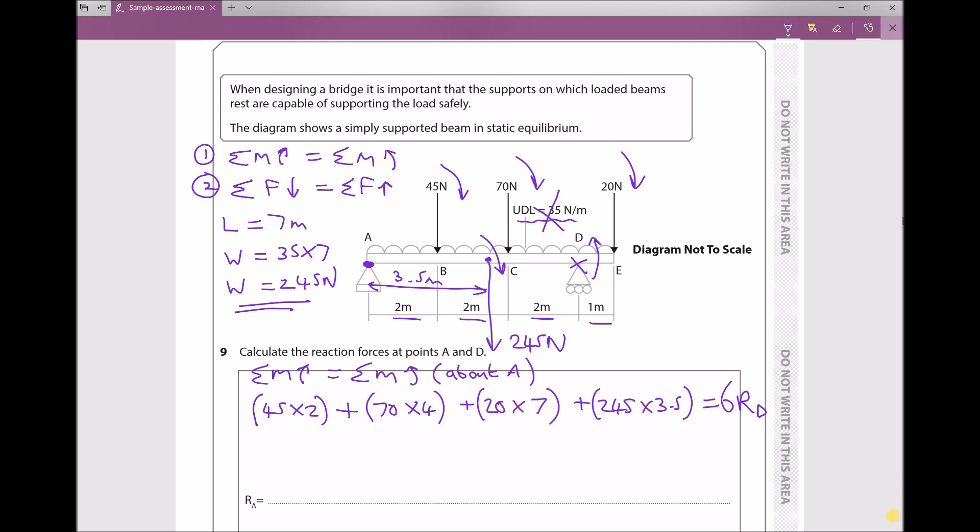So my next step is to simplify the left hand side. All I'm going to do is multiply that out. So (45×2) + (70×4) + (20×7) + (245×3.5) equals 1367.5. And that still equals 6RD because we haven't done anything to our right hand side.